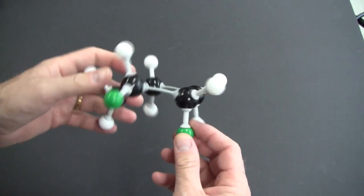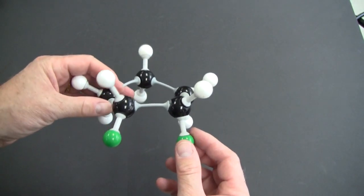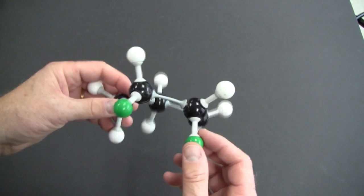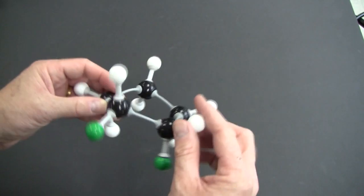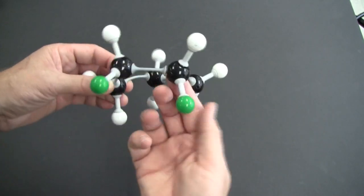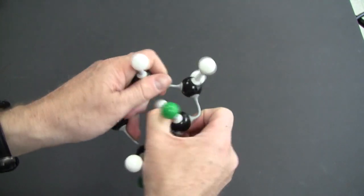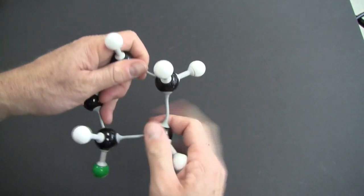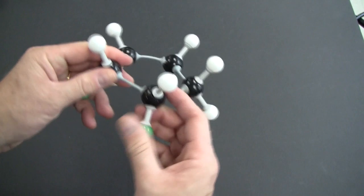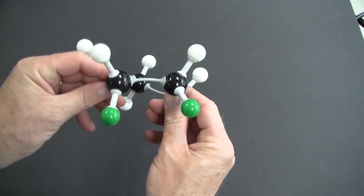This is the cis configuration where they're both on the same side. Now a few years ago some smart alec kid said that you did have rotation around these bonds. There was some free rotation and he did this to the cis version. But you know what? Even if it does rotate, it still comes out as the cis.